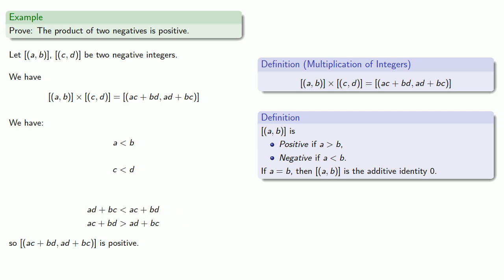And remember that a, b, c, and d are natural numbers, and so we can assume that we've proven all of their properties, because you have done all your homework, right?